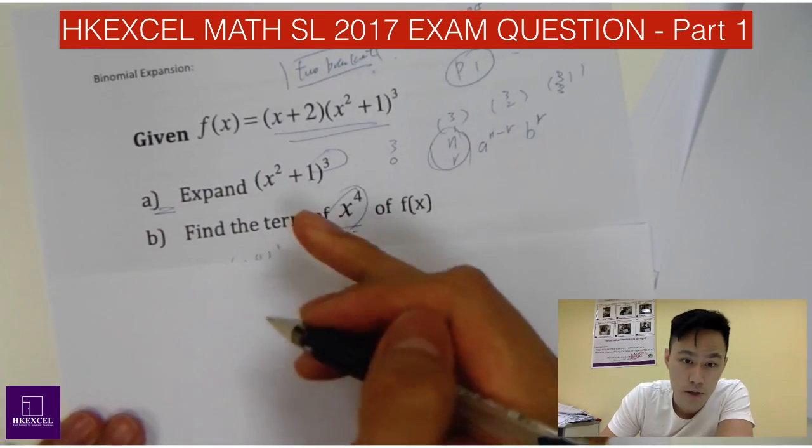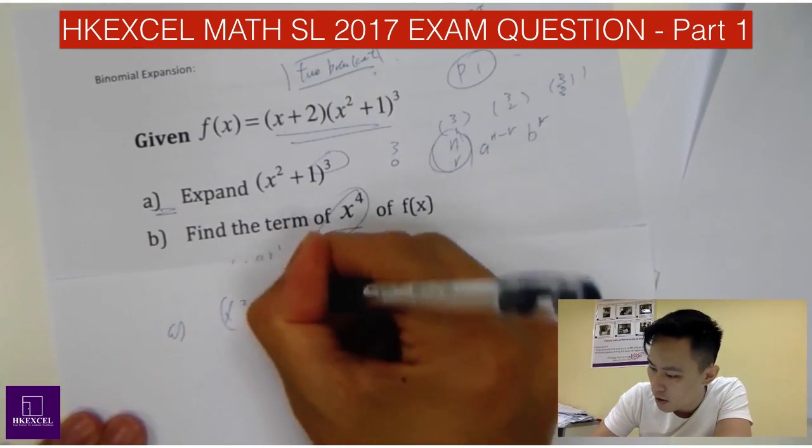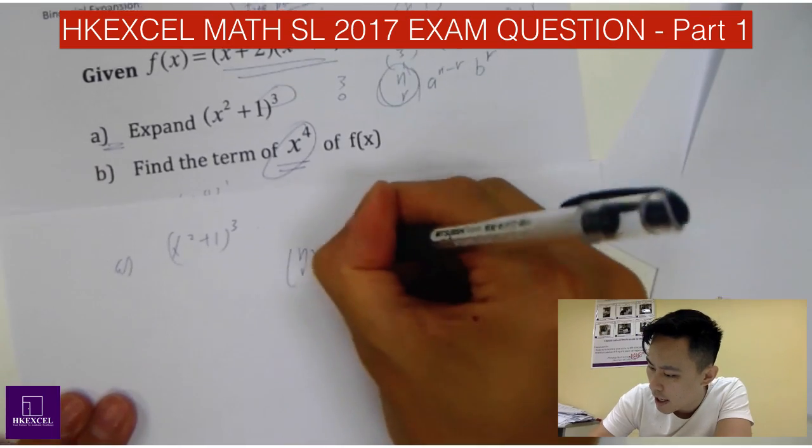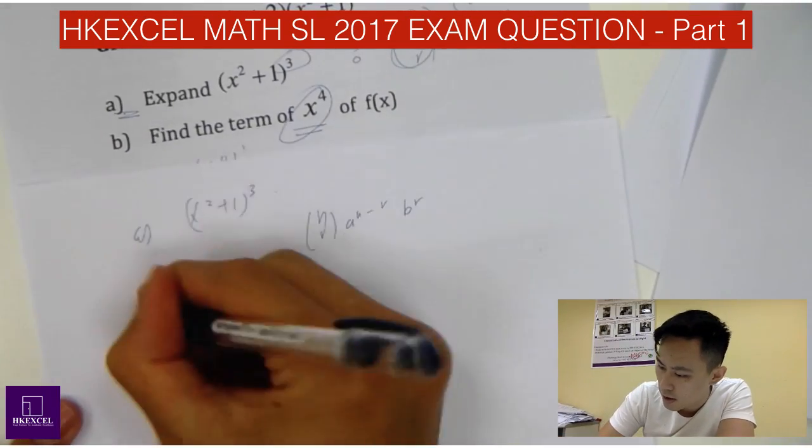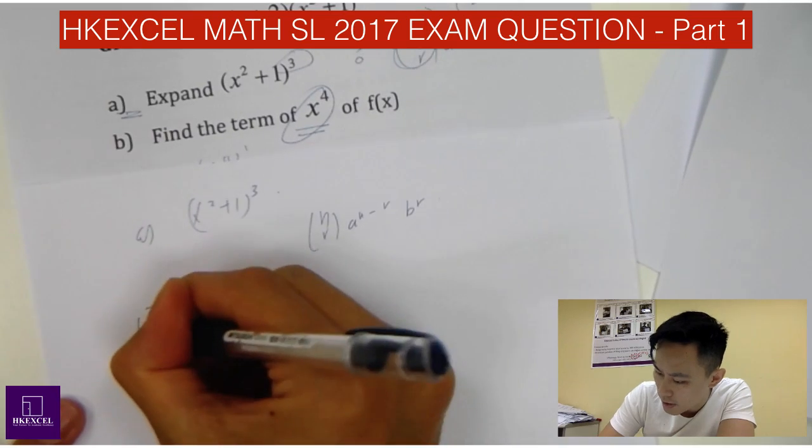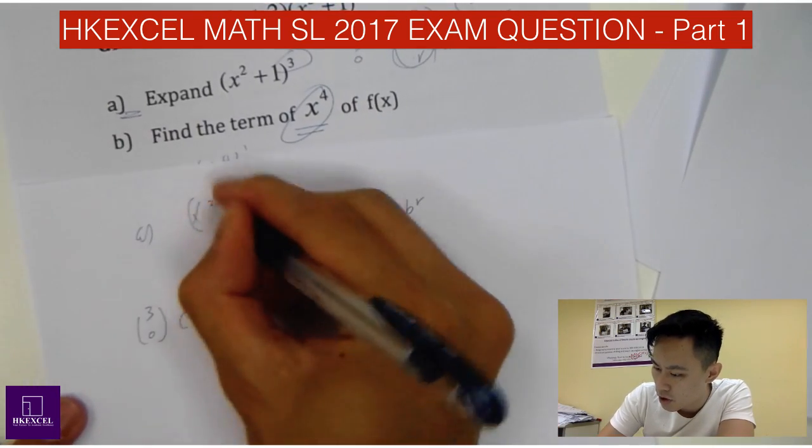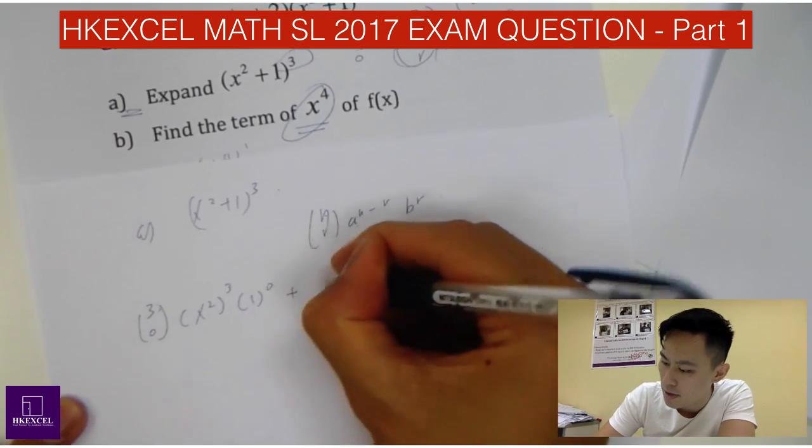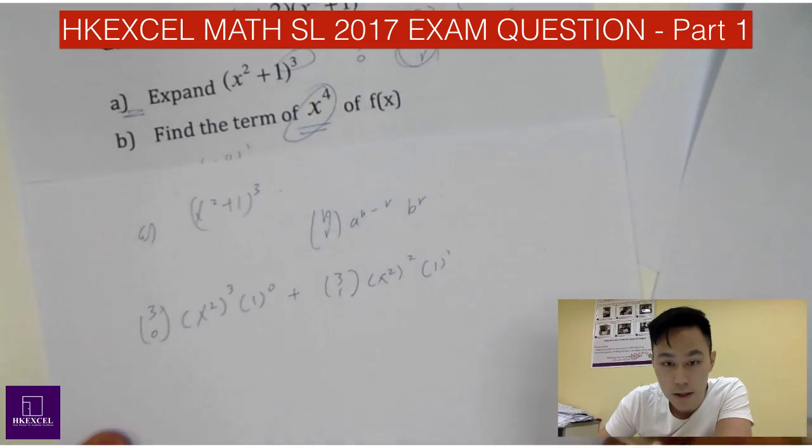Just expand (x²+1)³. So we just need to use the binomial expansion, which is nCr a^(n-r) b^r. So you know that power 3, then it will be starting from 3 and then 0. So nCr a^(n-r), right? a is just the first term, 3 minus 0 is 3, 1^0 plus 3C1 x² squared and then 1^1. You get that.